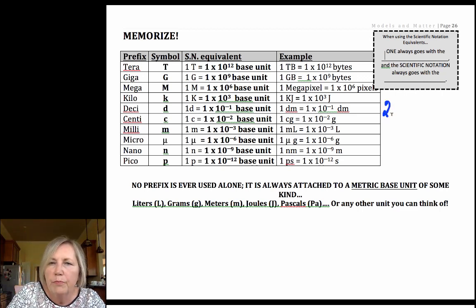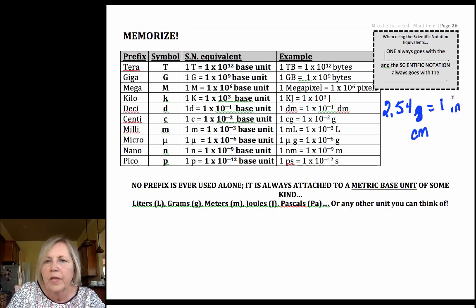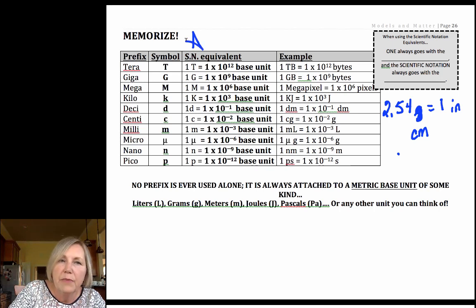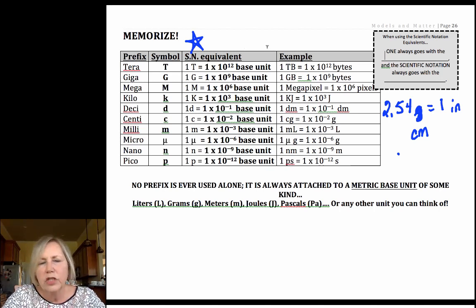For my personal students I don't make them memorize English to metric. For example, I don't make them memorize that there are 2.45 centimeters for every one inch. I will give you, if you are my student, I will give you English to metric conversions. What you must memorize are the most common metric prefixes that are used not only in chemistry but also in common language now because of computer language.